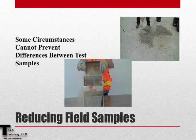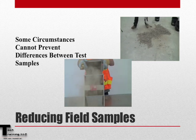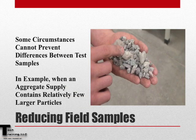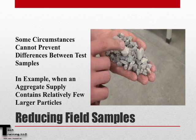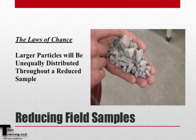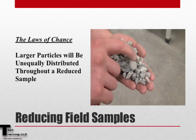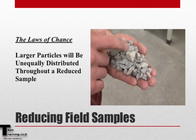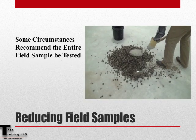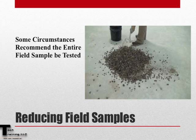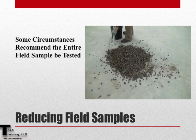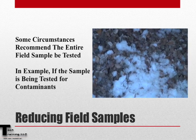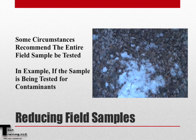However, in some circumstances, differences between test samples cannot be avoided. For example, when the sample contains relatively few larger particles, the laws of chance state that these larger particles may not be evenly distributed throughout the sample. Therefore, there are some instances where it is recommended that the entire field sample be tested — for example, if the sample is being tested for contaminants that may be present in relatively few particles.